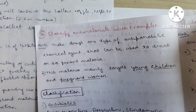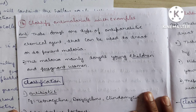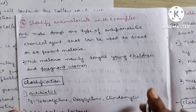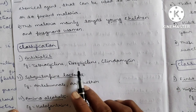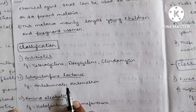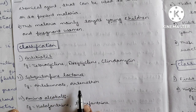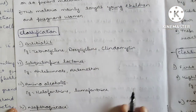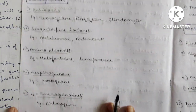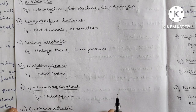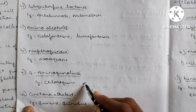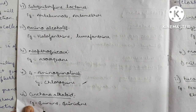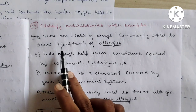Question 14: Classify anti-malarial drugs with examples. These are anti-parasitic agents used to treat or prevent malaria, which mainly affects young children and pregnant women. Classification: Antibiotics — tetracycline, doxycycline, clindamycin. Sesquiterpene lactones — artesunate, artemether. Amino alcohols — halofantrine, lumefantrine. Naphthoquinones — atovaquone. 4-aminoquinolines — chloroquine, commonly used in India. Cinchona alkaloids — quinine.